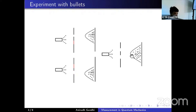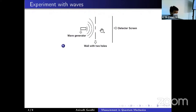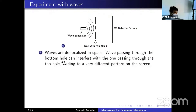Now we do the same experiment with waves. We replace the bullet gun with a wave generator — the wave can be a water wave or sound wave; the nature of the wave is not so important. The wave passes through the wall with two holes and hits the detector screen. What the detector measures here is the intensity of the wave hitting the screen. Unlike bullets, waves are delocalized in space — you cannot think of a wave just passing through one hole at a time. It passes through both holes simultaneously, and the wave passing through the bottom hole can interfere with the one from the top hole, leading to a very different pattern on the screen.